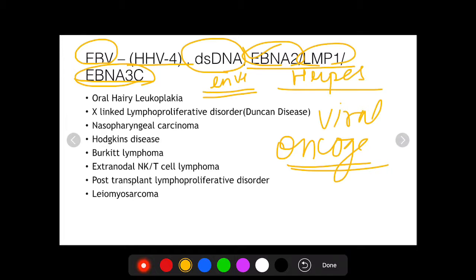Diseases that have Epstein-Barr virus as a factor in their pathogenesis include oral hairy leukoplakia, X-linked lymphoproliferative disorder also known as Duncan disease, nasopharyngeal carcinoma, Hodgkin's lymphoma, Burkitt lymphoma, extranodal NK/T cell lymphoma, post-transplant lymphoproliferative disorder, and leiomyosarcoma.